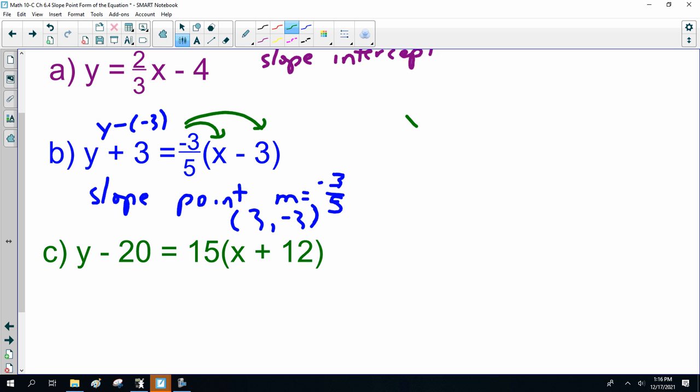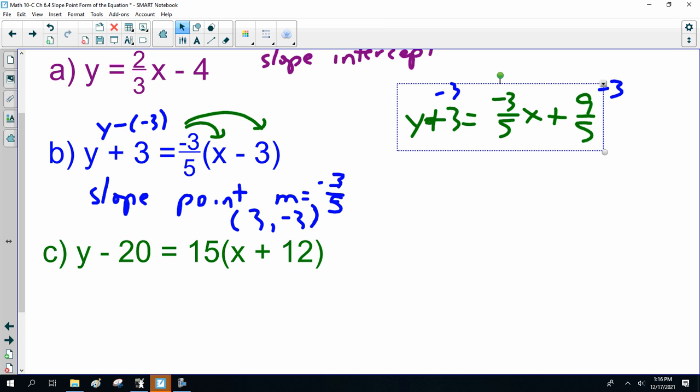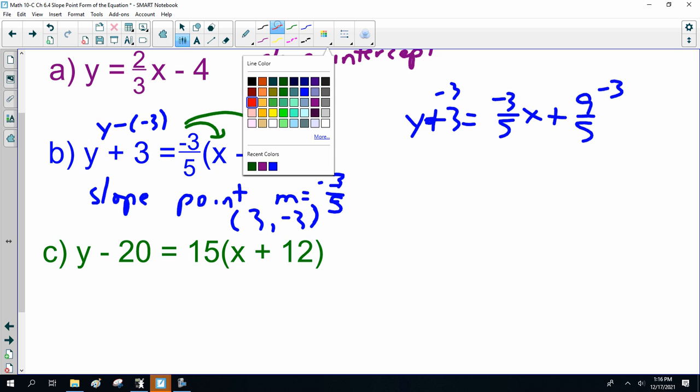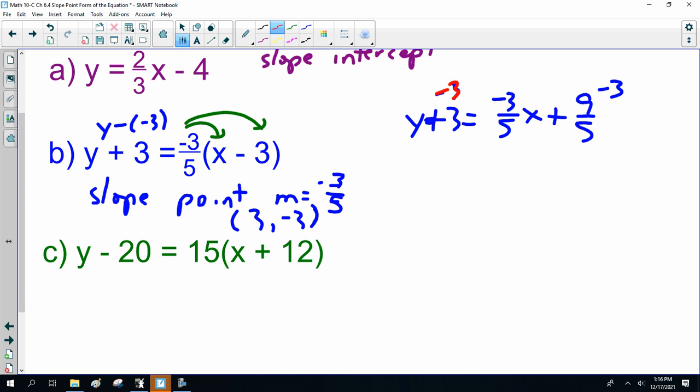So that is y plus 3 equals minus 3/5 x. Now, that's plus 9/5, and then you would subtract 3 from both sides. And I suppose I should color-code it. I technically am normal challenged, but anyway.